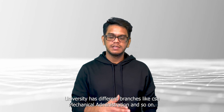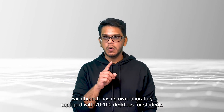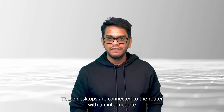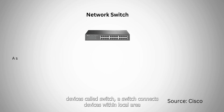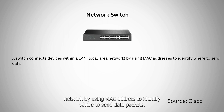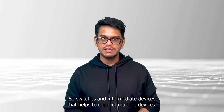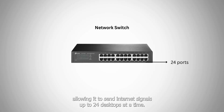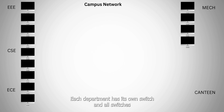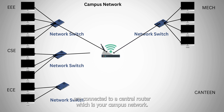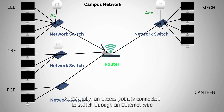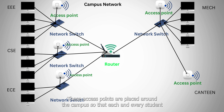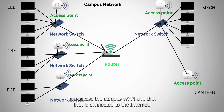Universities have different branches like IT, CSE, Mechanical, Administration, and so on. Each branch has its own laboratory equipped with 70 to 100 desktops for students, all with internet access. These desktops are connected to the router through an intermediate device called a switch. A switch connects devices within a local area network by using MAC addresses to identify where to send data packets. Each switch is equipped with 24 ports, allowing internet signals to be distributed to up to 24 desktops at a time. Each department has its own switch, and all switches are connected to a central router forming the campus network. Additionally, an access point is connected to a switch through an ethernet wire and converts internet signals into Wi-Fi signals. These access points are placed around the campus so that every student can access the campus Wi-Fi.